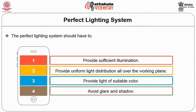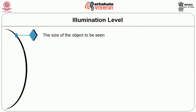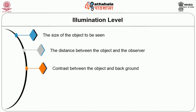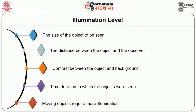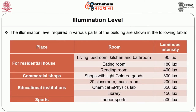The following factors are to be considered while designing a lighting scheme. Illumination level: for each type of work, there is a range of brightness which gives maximum output in terms of quality and quantity. The degree of illumination required depends on the size of the object to be seen, the distance between the object and the observer, contrast between the object and the background, the time duration for which objects are viewed, and whether objects are moving — moving objects require more illumination.